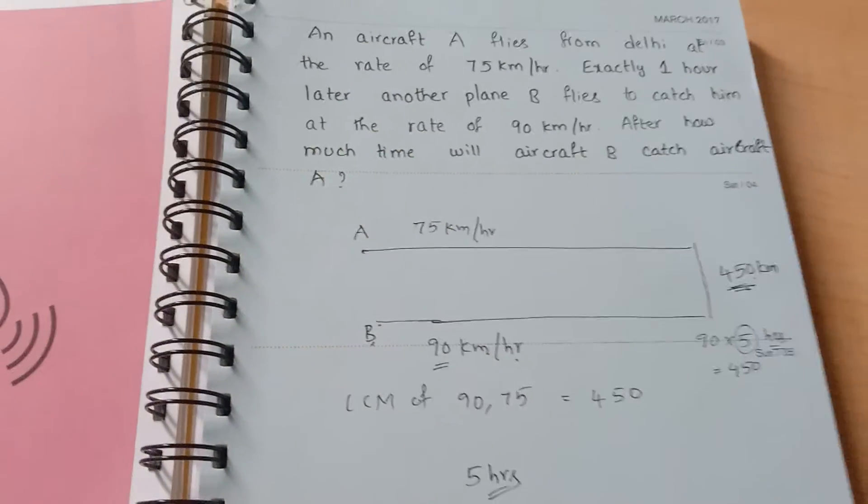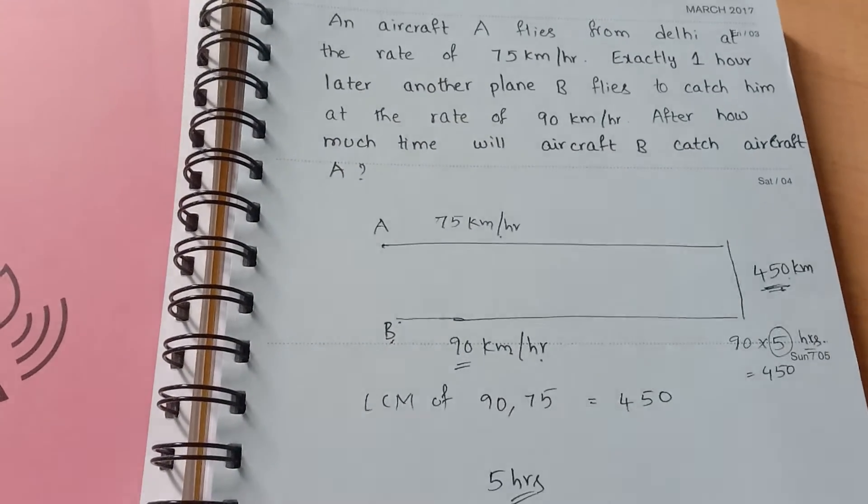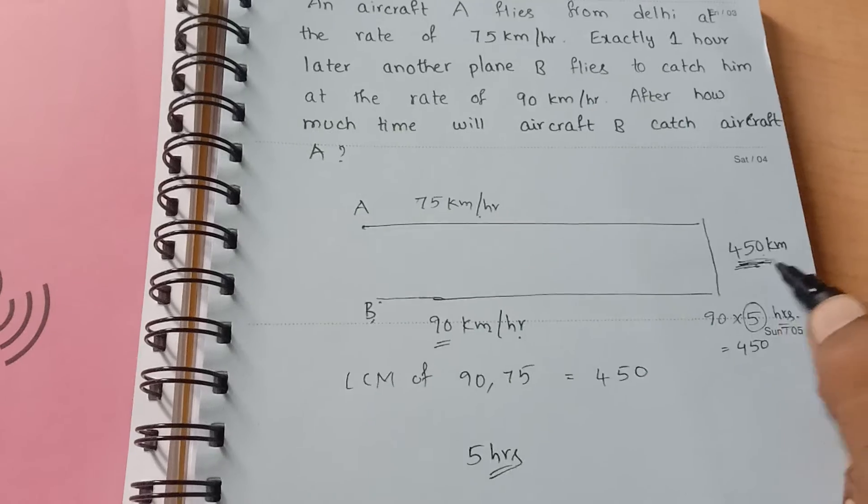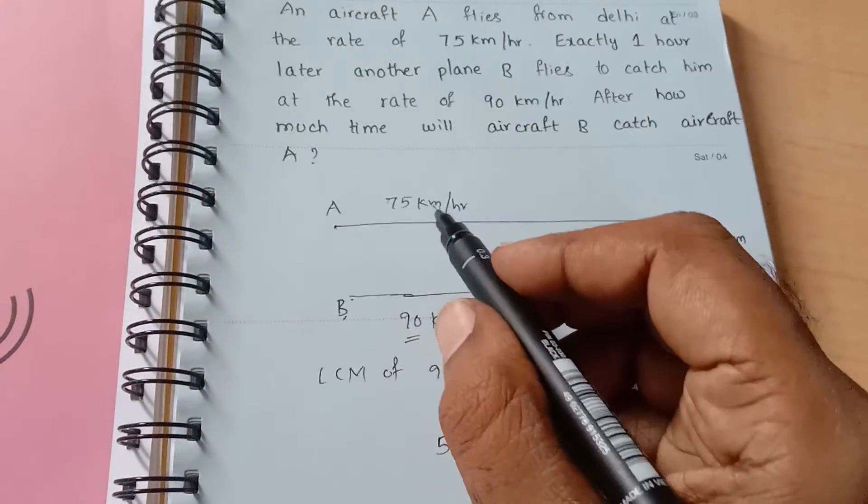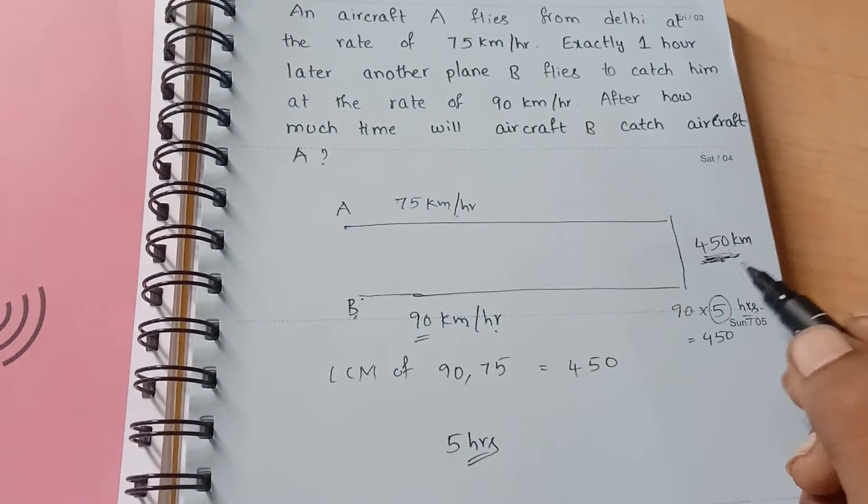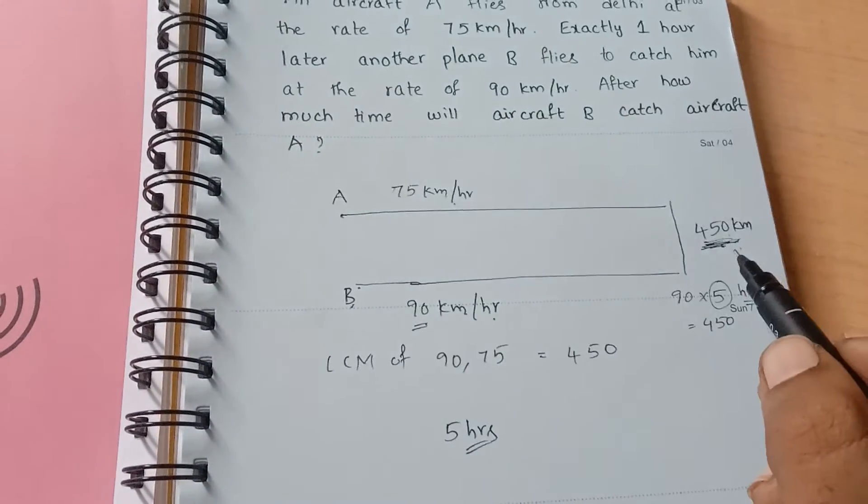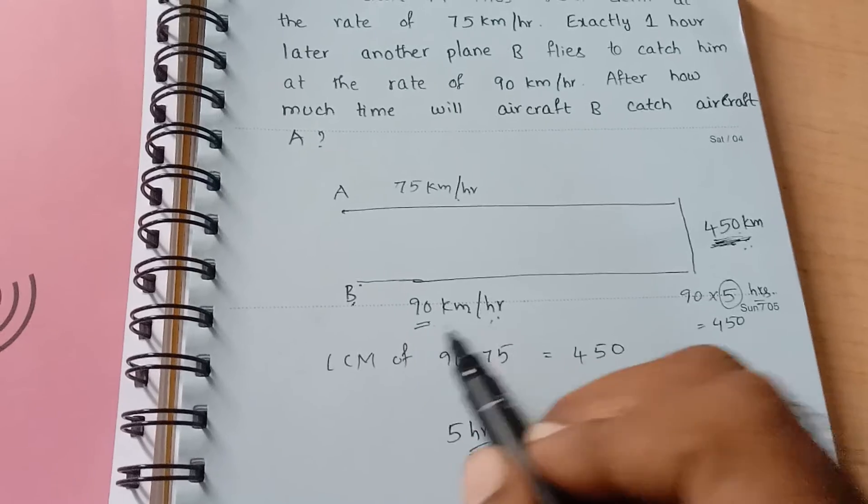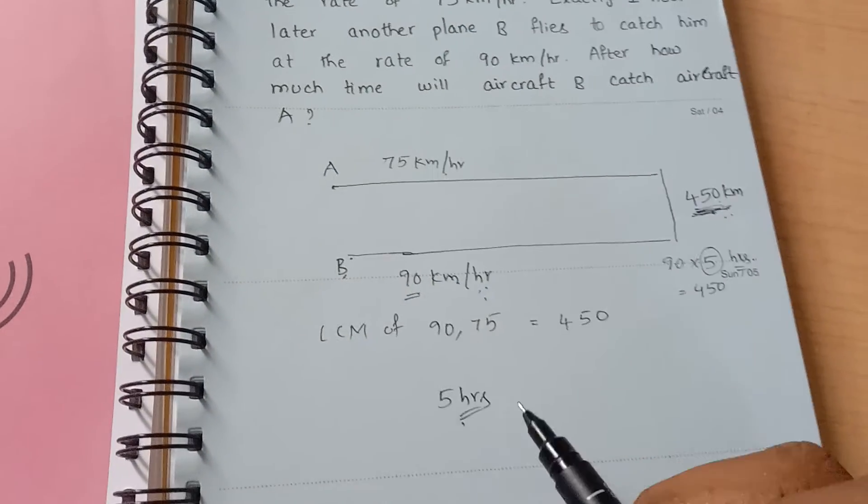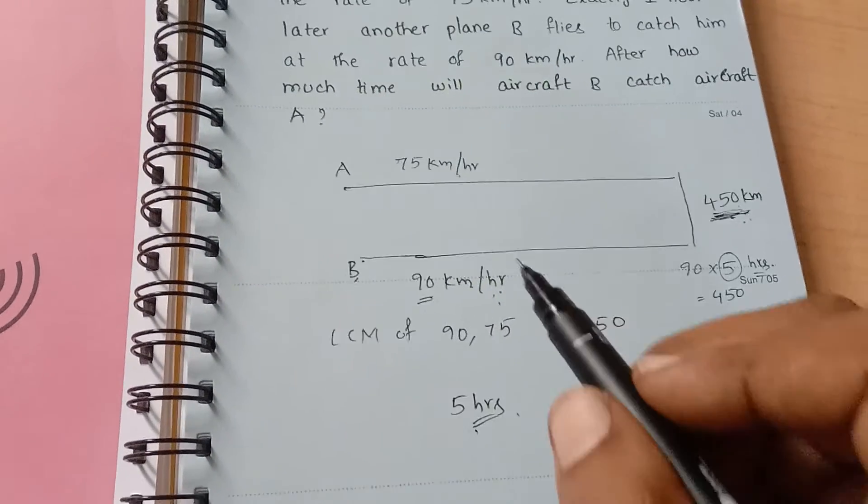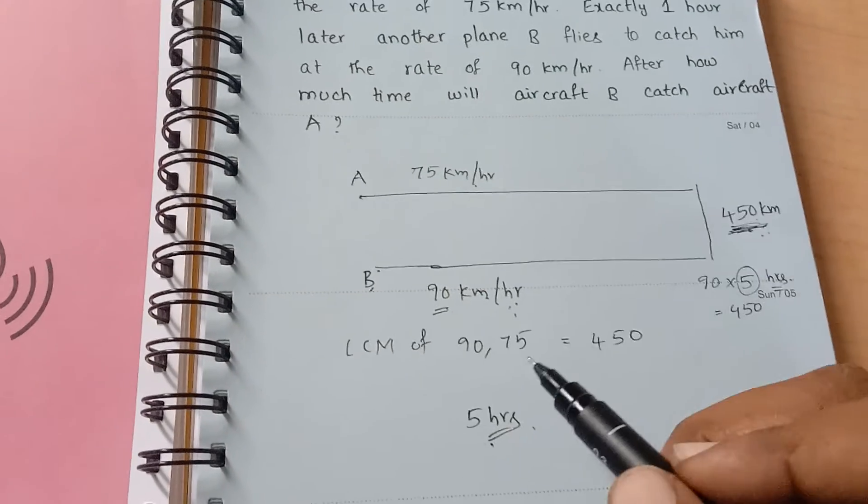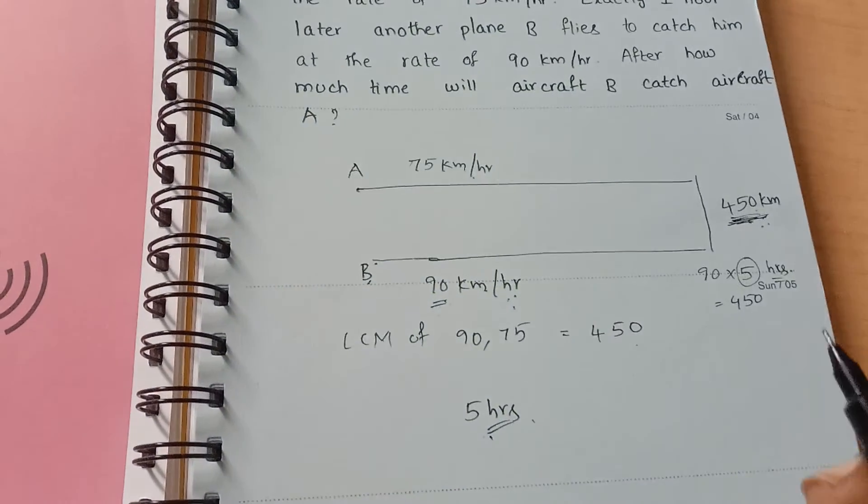It is very easy. If you take LCM for 75 and 90, the two planes are meeting at a distance of 450 km. For travelling 450 km, what is the time taken for B is 5 hours. If you calculate, if you do LCM, then you can find it easily.